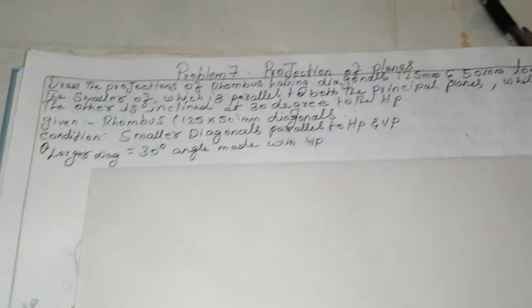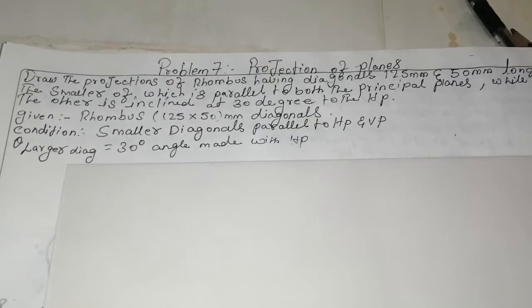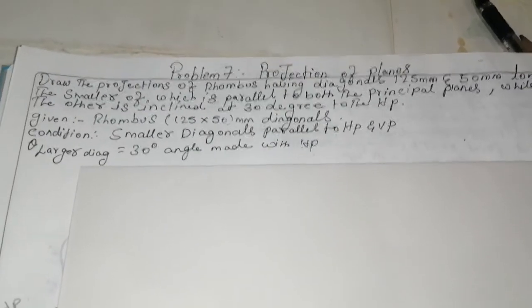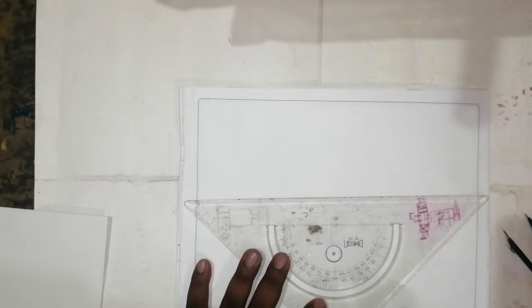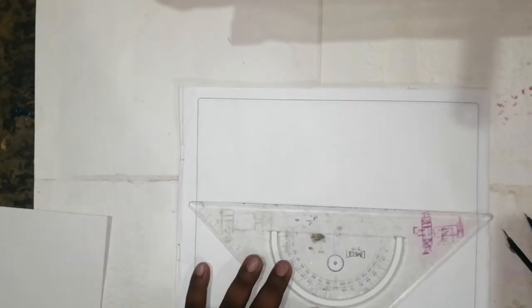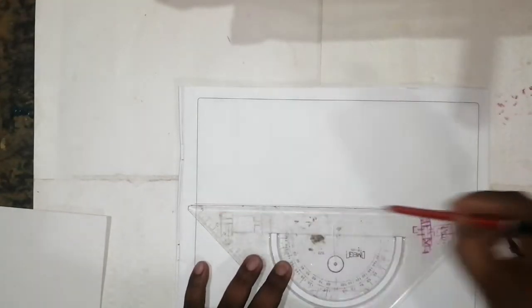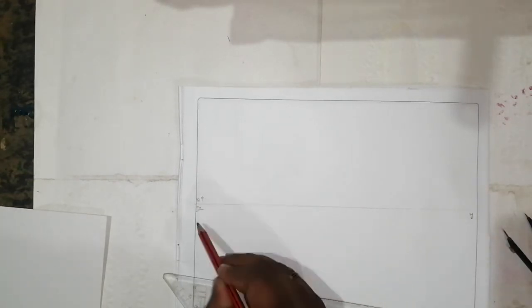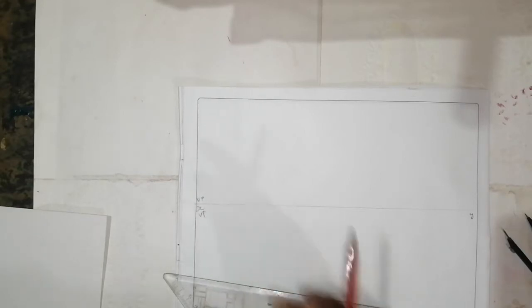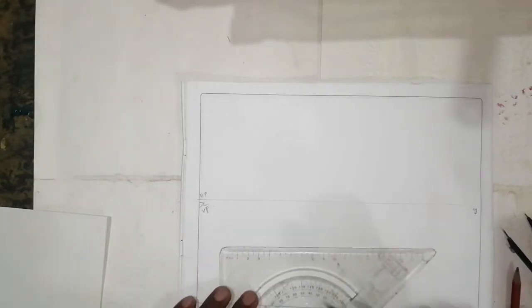We're going to draw this step by step. The problem is given like this. Take an axis line, this is going to be XY for HP and VP. The longer side is 125 mm, so I'm taking it like this.